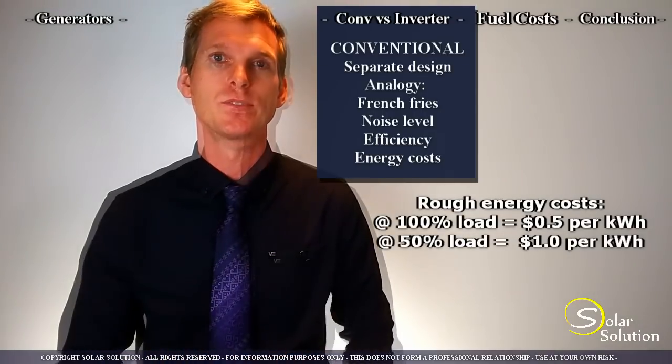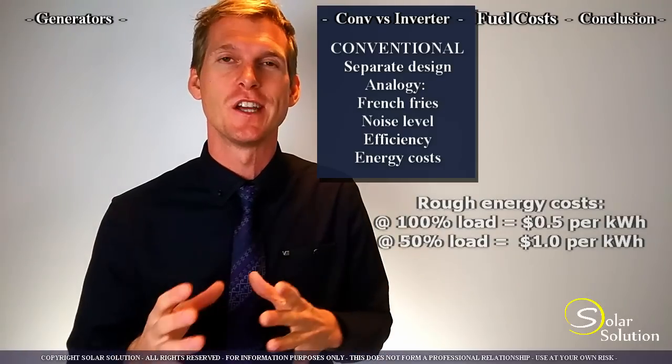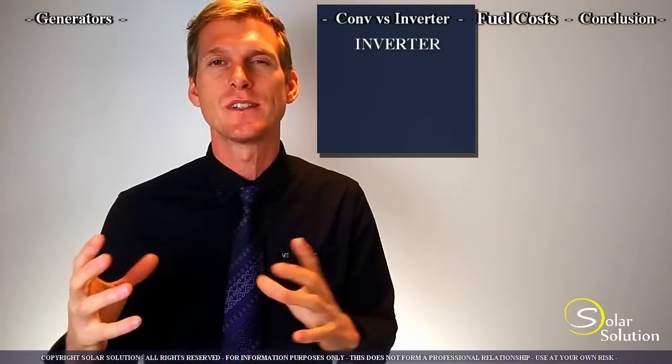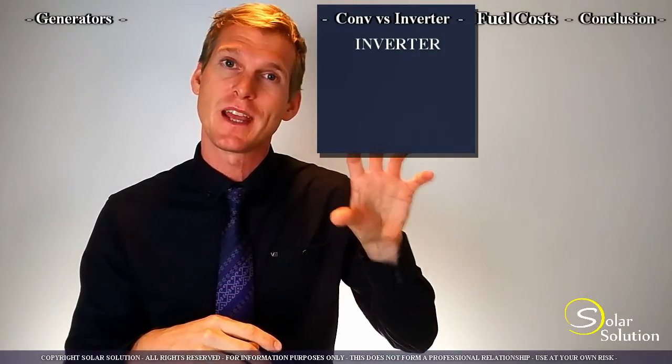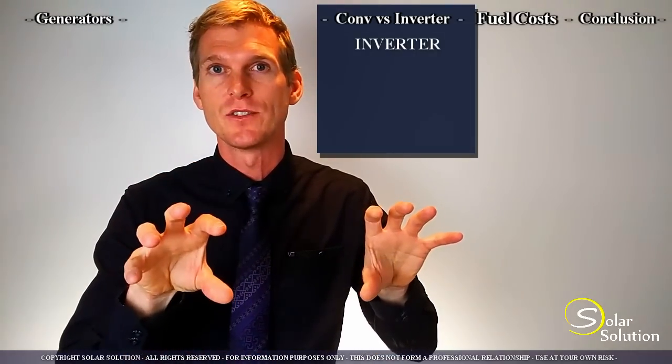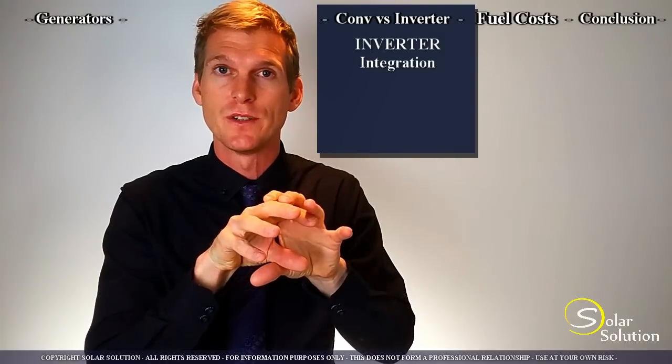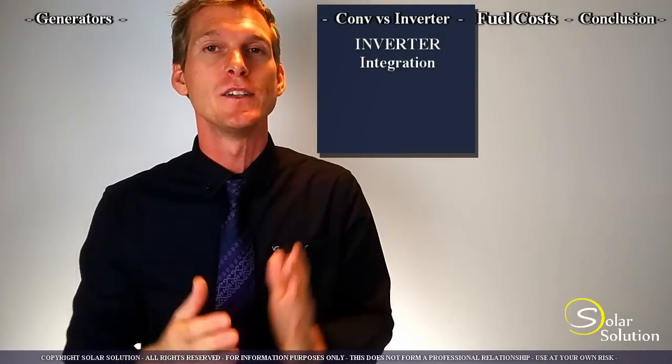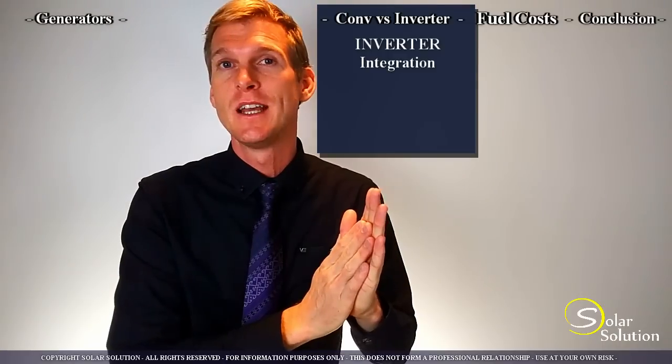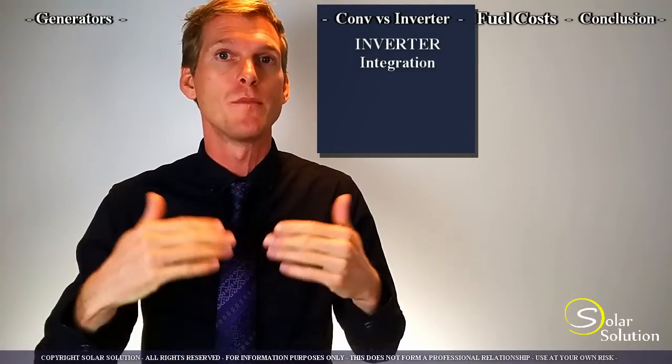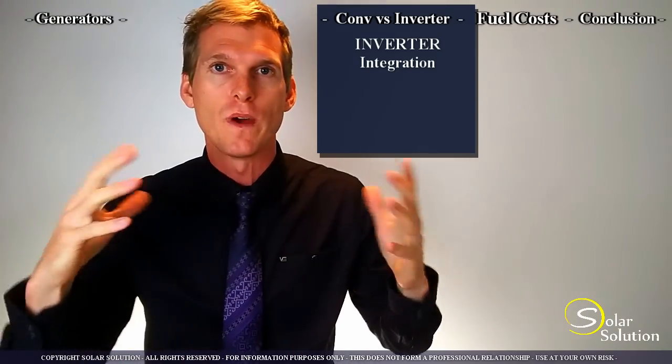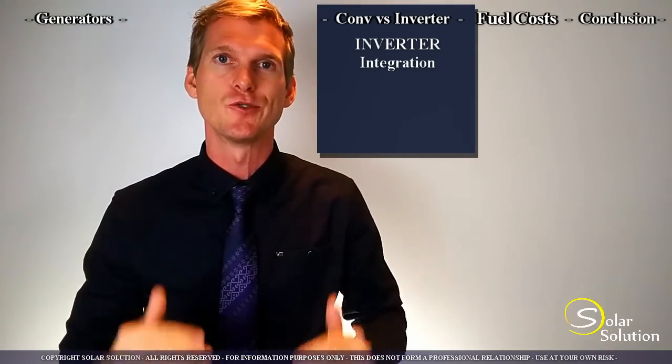So now let's look at the inverted generator. The basic layout is somewhat similar to the conventional type but now what they've done is instead of having a separate engine and a separate electrical generator they really combine it into one unit. They do this for example by using the flywheel of the engine and then using it to directly produce electricity. So the obvious result of this is that the overall weight of the unit and the volume can be drastically reduced.